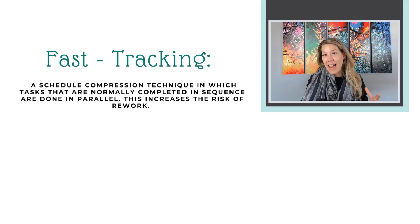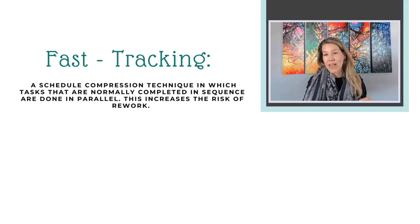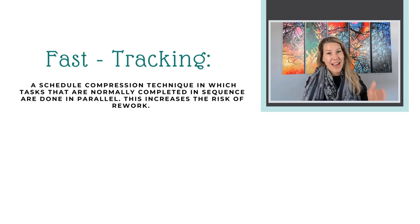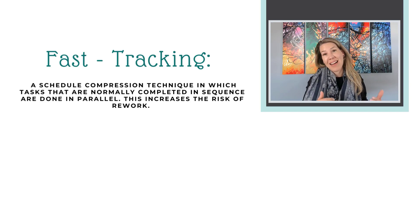The downside of using fast tracking as a schedule compression technique is that it really does increase the risk of rework. So when there are dependencies, and the ideal way to complete the work is task one completed first and then task two, if you're doing them in parallel and something changes with task one, then that may also impact task two, requiring some rework.